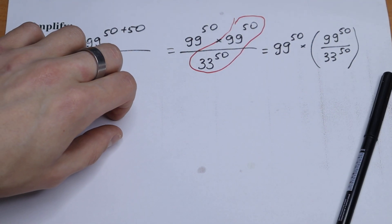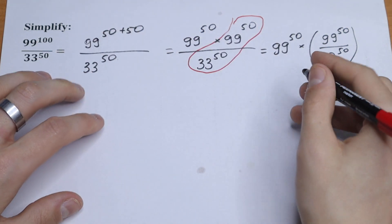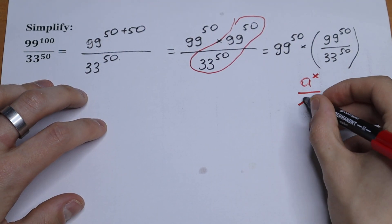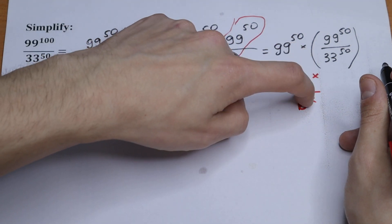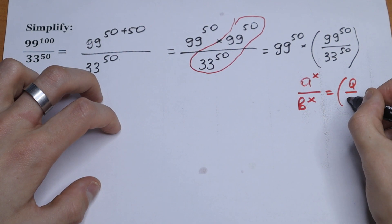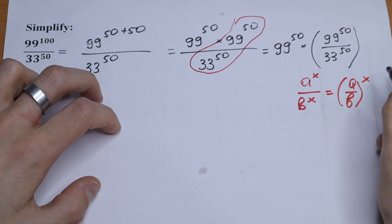And take a look. This is a really good case to use our rule. If we have a to the power x over b to the power x, if we have the same powers but different exponents, we can write it in one parenthesis: a over b raised to the power x.